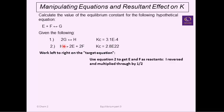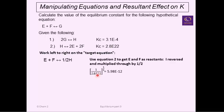To get E and F as reactants, I reverse equation 2 and multiply through by one half. Doing so gives me one mole of E and one mole of F as reactants — covering two pieces of the target equation. For the equilibrium constant, flipping it means taking the inverse (put it over 1), and multiplying through by one half means raising it to the half power. Doing both together: (1 / KC2)^(1/2) gives 5.98×10⁻¹².